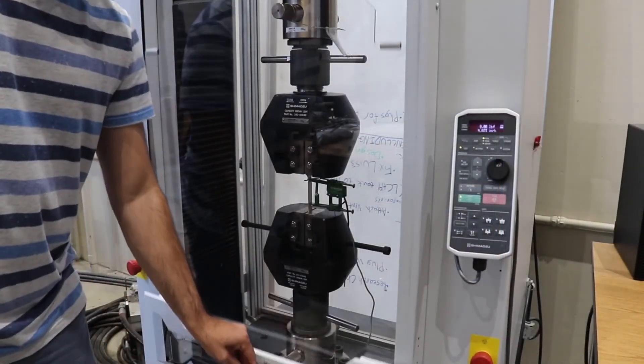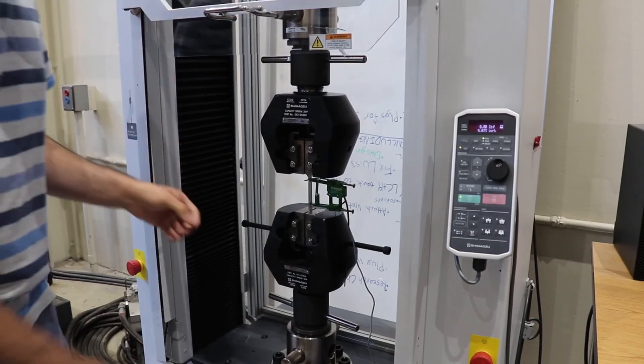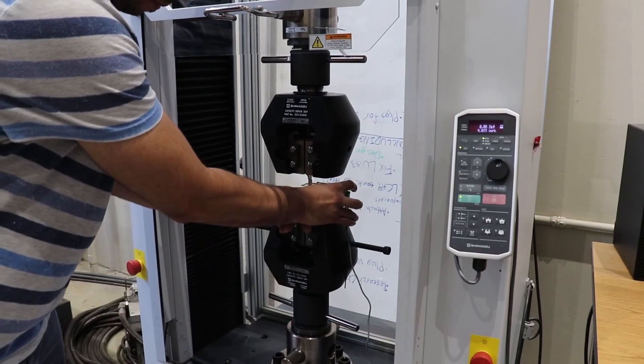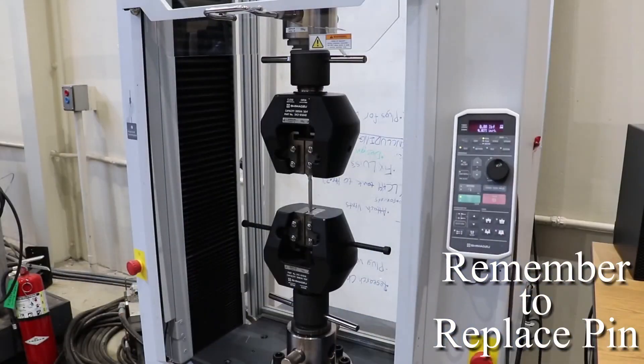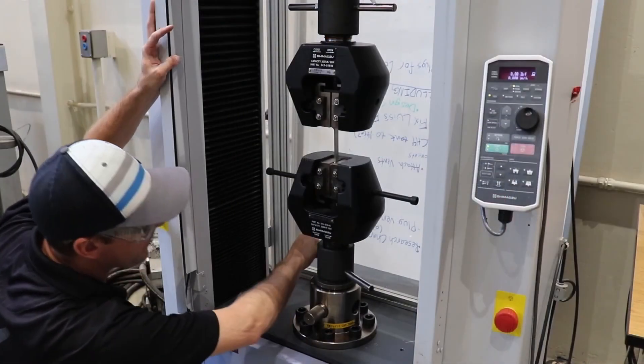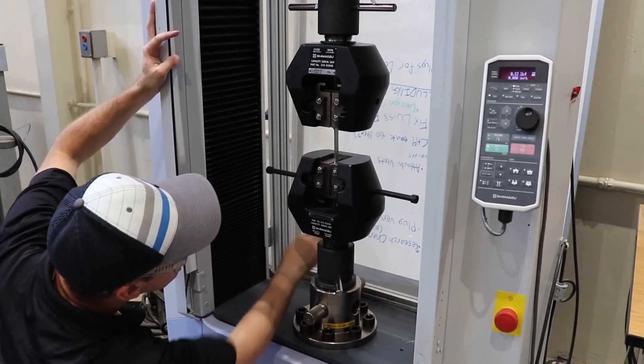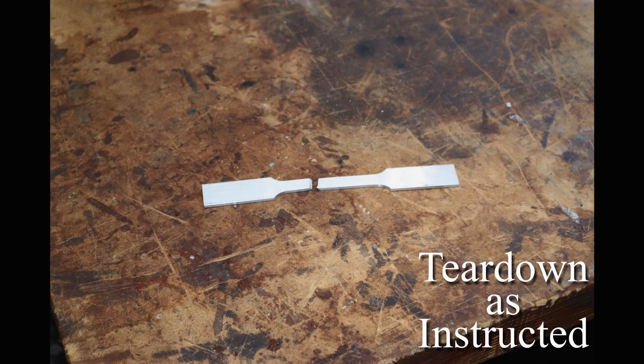We now begin the teardown process. First, we raise the shield. Next, we remove the extensometer being very careful as it does not have its pin in at the moment. Our next step involves untightening the jaws and removing our used specimen. Thank you for watching the tension tests using the Shimadzu. Tear down as your instructor requires.